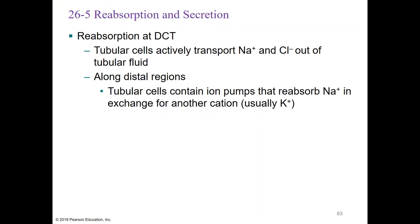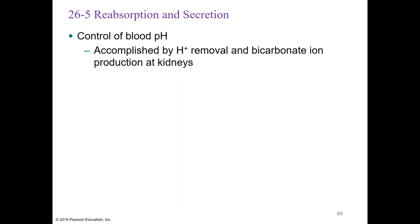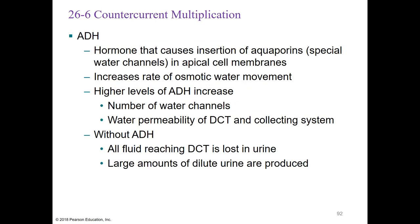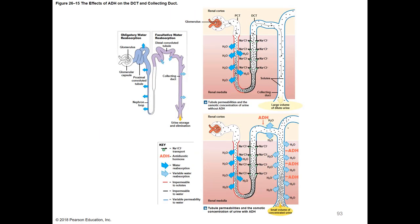ADH — antidiuretic hormone — causes the insertion of aquaporins, which are special water channels in the apical cell membranes, increasing the rate of water movement. Higher levels of ADH increase the number of water channels and increase water permeability of the DCT and collecting system specifically. Without ADH, all fluid reaching the DCT will be lost in urine, producing large amounts of dilute urine.